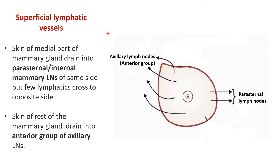The superficial lymphatic vessels draining the skin overlying the mammary gland, except for the areola and nipple, drain into two groups of lymph nodes. From the medial aspect of the breast they drain into the parasternal lymph nodes — not only of the same side but also to the opposite side. This is very important because carcinoma from one side of the breast can spread to the other side. The rest of the skin covering the mammary gland drains into the anterior or pectoral group of axillary lymph nodes.